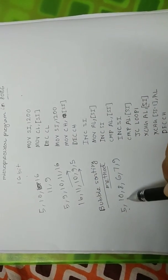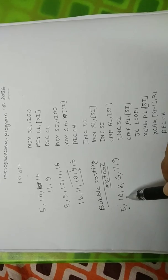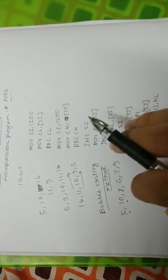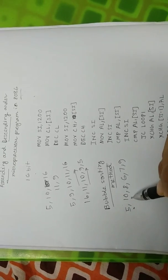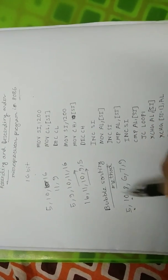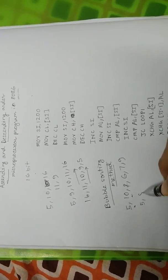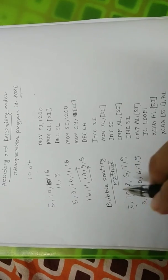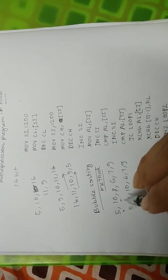Bubble sorting states that we compare the first two numbers. If the first number is greater than the second, we exchange their positions. Here, 5 is less than 10, so no exchange needed. But 10 is greater than 8, so we exchange them. After the first pass, the sequence becomes 5, 8, 10, 6, 7, 9.